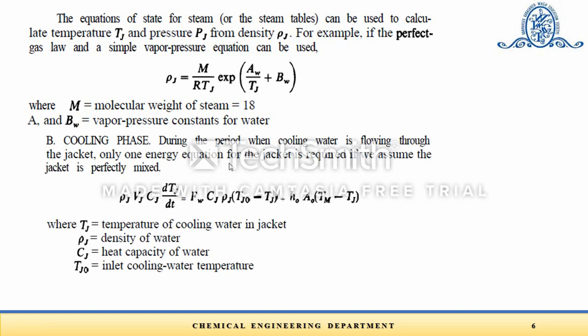For the cooling phase, cooling water flows through the jacket with the same flow rate at inlet and outlet, so no total continuity equation is needed — only one energy equation for the jacket is required. The accumulation term equals the flow of energy in and out due to bulk flow plus heat added to the system (work done is neglected in all energy equations). With inlet temperature T_j0 and outlet temperature T_j, the energy equation becomes: rho_j·V_j·C_j·dT_j/dt = F_j·rho_j·C_j·(T_j0 - T_j) + H_O·A_O·(T_m - T_j). This equation (equation 8) gives how jacket temperature changes with time during the cooling phase.